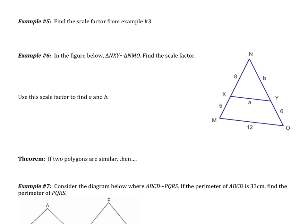Example 5 asks for the scale factor from number 3 — we already did that; the scale factor was 2 to 1. Now example 6 says: in the figure below, triangle NXY is similar to triangle NMO. Find the scale factor. First, write the statement of proportionality matching all corresponding sides. NX is going to correspond to NM. Pause the video, finish the statement of proportionality, and fill it in. NX is 8 and NM, this entire side, is 13.